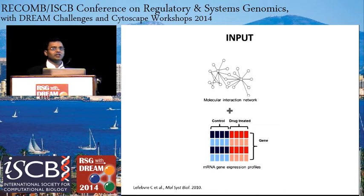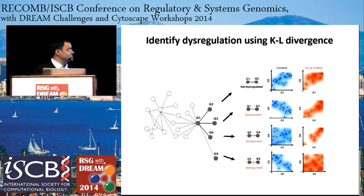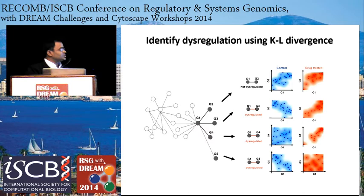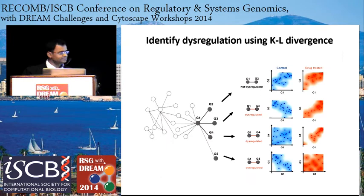Once we have all these inputs, what this algorithm does is for every pair of genes involved in an interaction, it computes a probability density for their expression using the control samples as well as the gene expression profiles generated following the drug perturbation. I'm giving four different examples to show what we mean by the dysregulation of the interactions, which we measure using KL divergence on the probability density. In the first case, with gene one and gene two, the probability density cloud before and after drug treatment is not really much different.